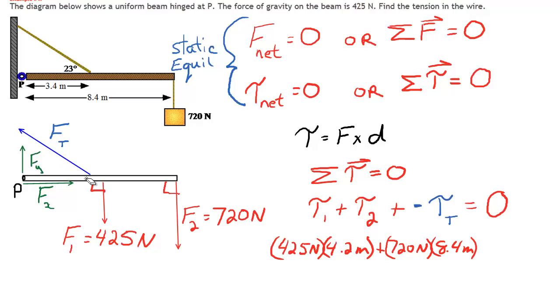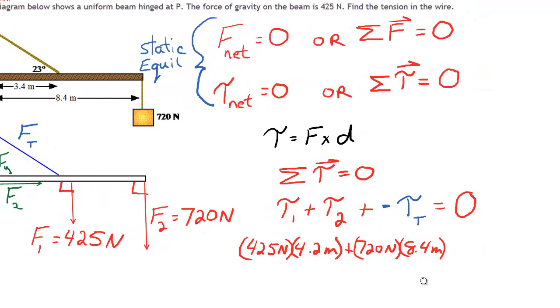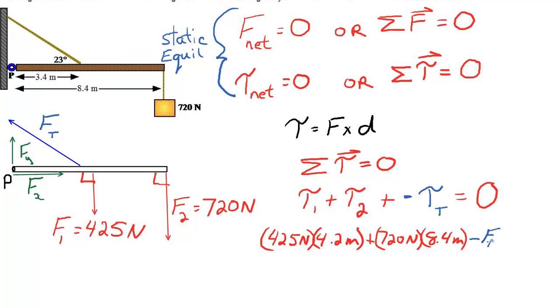Now the last one, our tension force. Our tension force acts at a distance of 3.4 meters from the hinge. So we know the distance. But if you look at the diagram, this tension force is clearly not 90 degrees to that 3.4. I'm going to need to use a component of the tension force to determine this. So what I'm going to do is write that as FT perpendicular. So when I write my tension force, it's going to look like this.